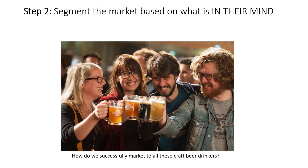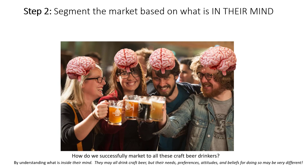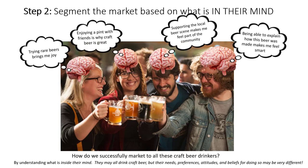The second step of the data-driven process is where we really come in. We're going to try to segment this market based on what's in their mind, using their mindset variables. We're going to peer into their minds using that survey data, because they all may drink craft beer, but their needs, preferences, attitudes, and beliefs about craft beer might be entirely different. For example, one person really enjoys trying rare beers, whereas another enjoys explaining how the beer was made — it makes them feel smart and special.